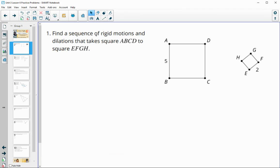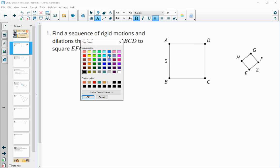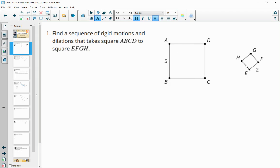Number one asks us to find a sequence of rigid motions and dilations that will take square ABCD to square EFGH. You have a few different ways that you can do this, so there isn't just one correct answer. But certainly we are going to have to do a dilation since ABCD is larger than EFGH.